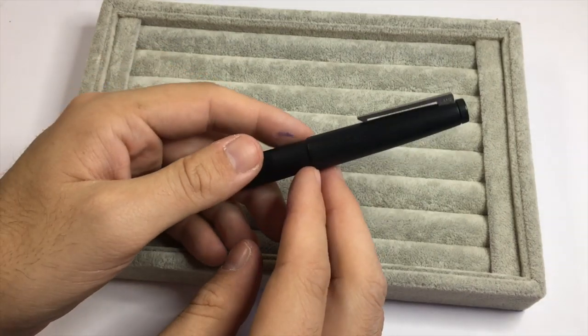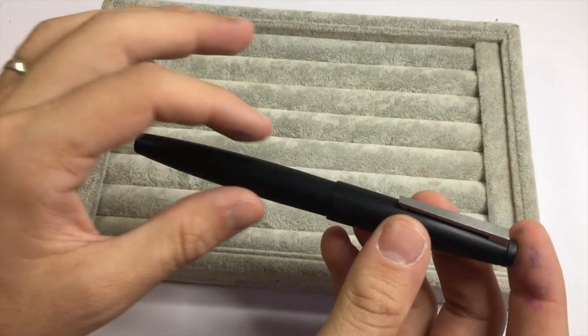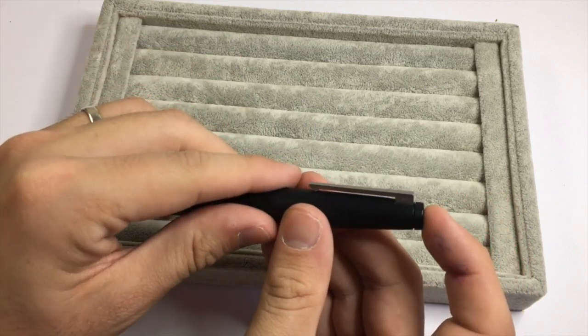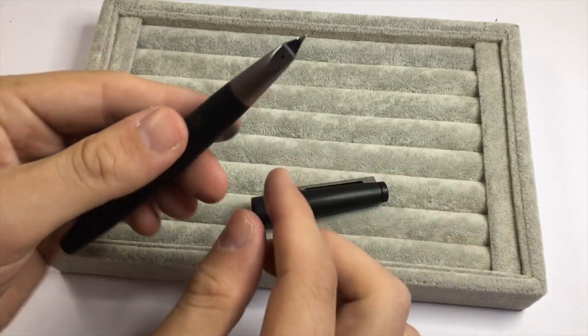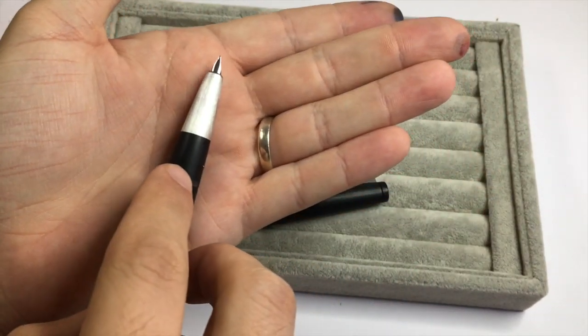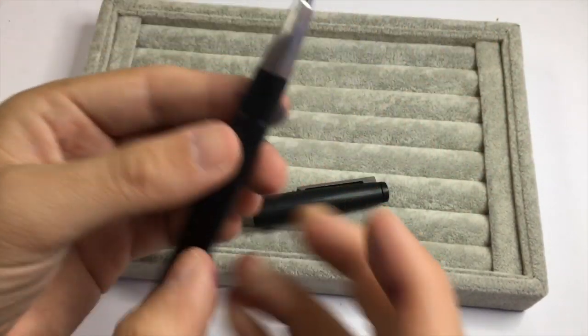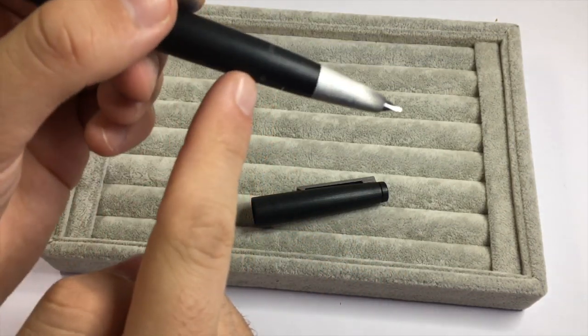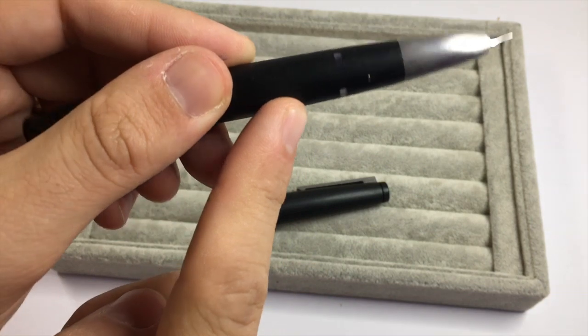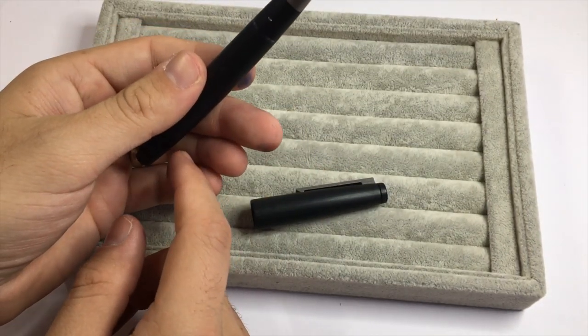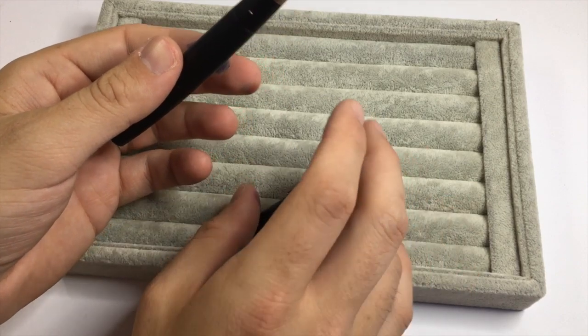But it's still, the tolerances are amazing. There's another join here, which, once again, is not so easy to see. So, really, really fabulous. The pen does have an ink window, so you can see how much ink you've got in there. I'm not sure how visible that will be in this video, but it is a functioning ink window, and very, very helpful.